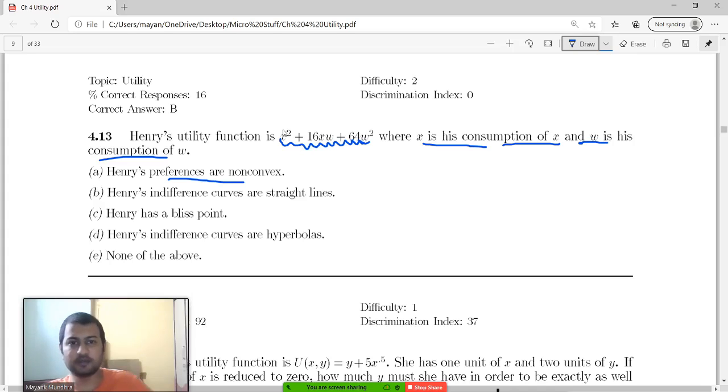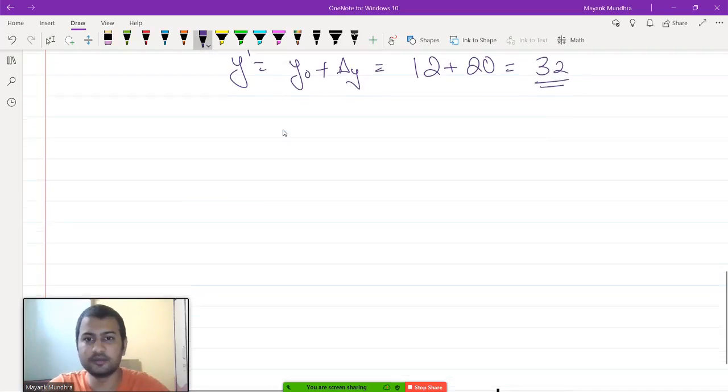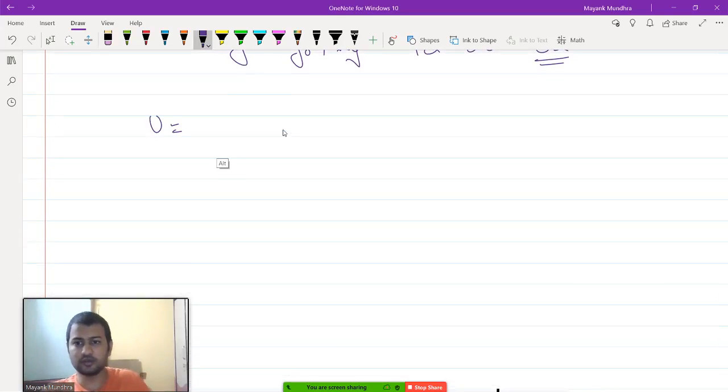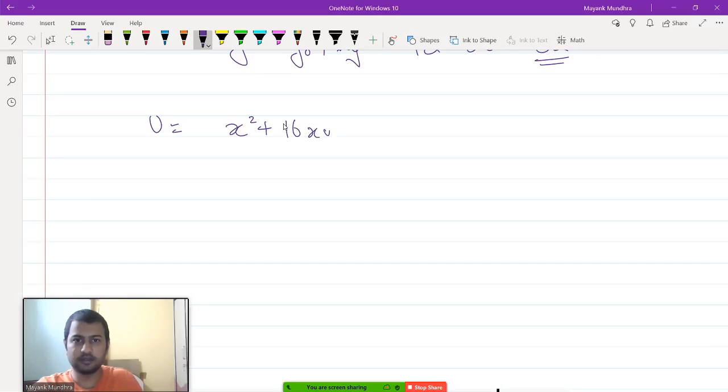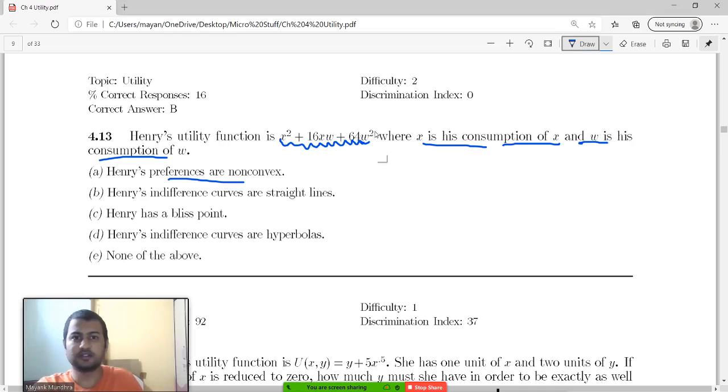So, x² + 16xw + 64w². So utility equals x² + 16xw + 64w².